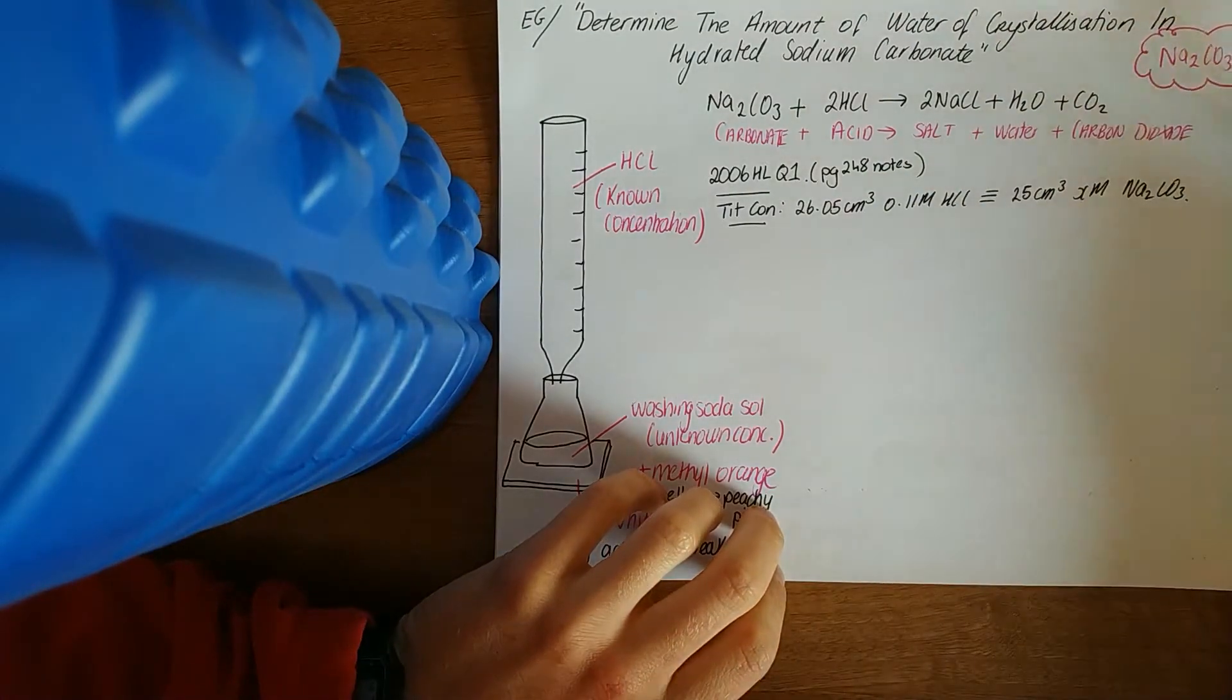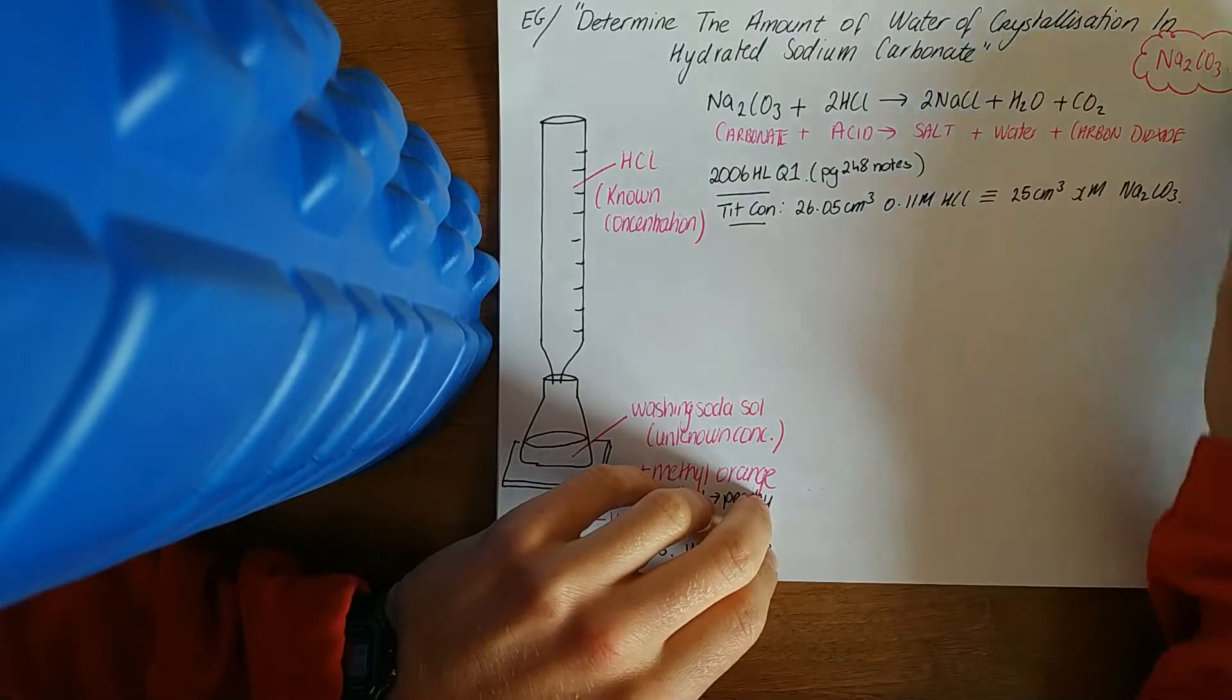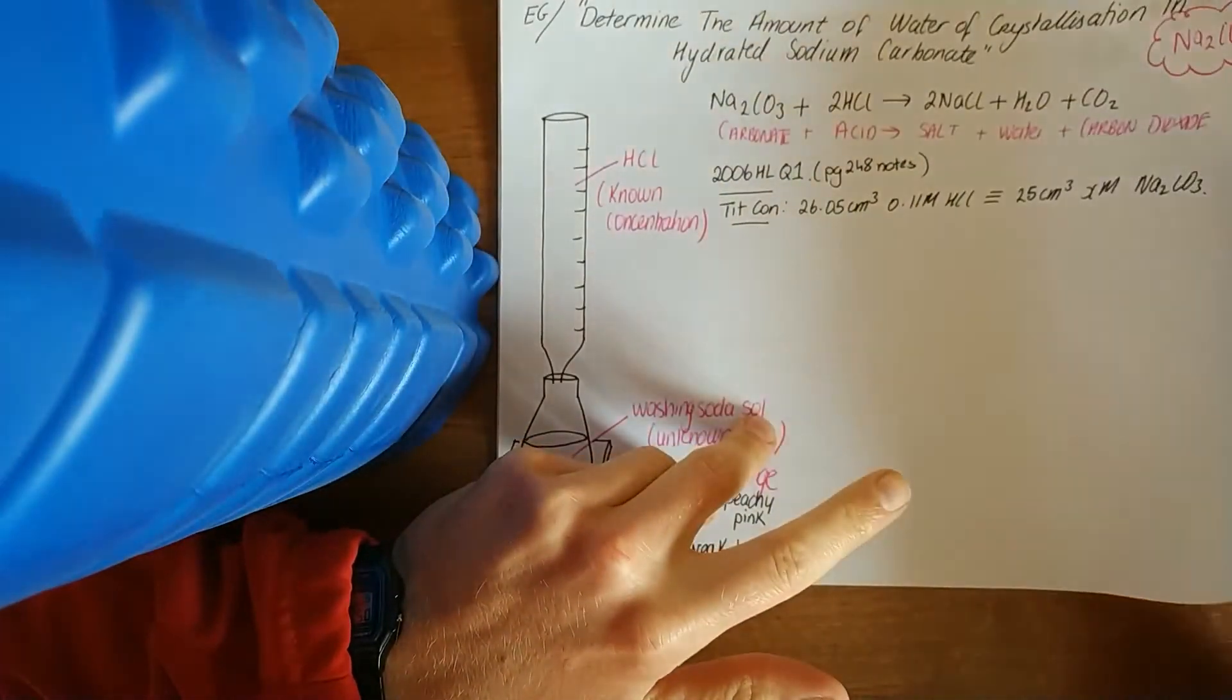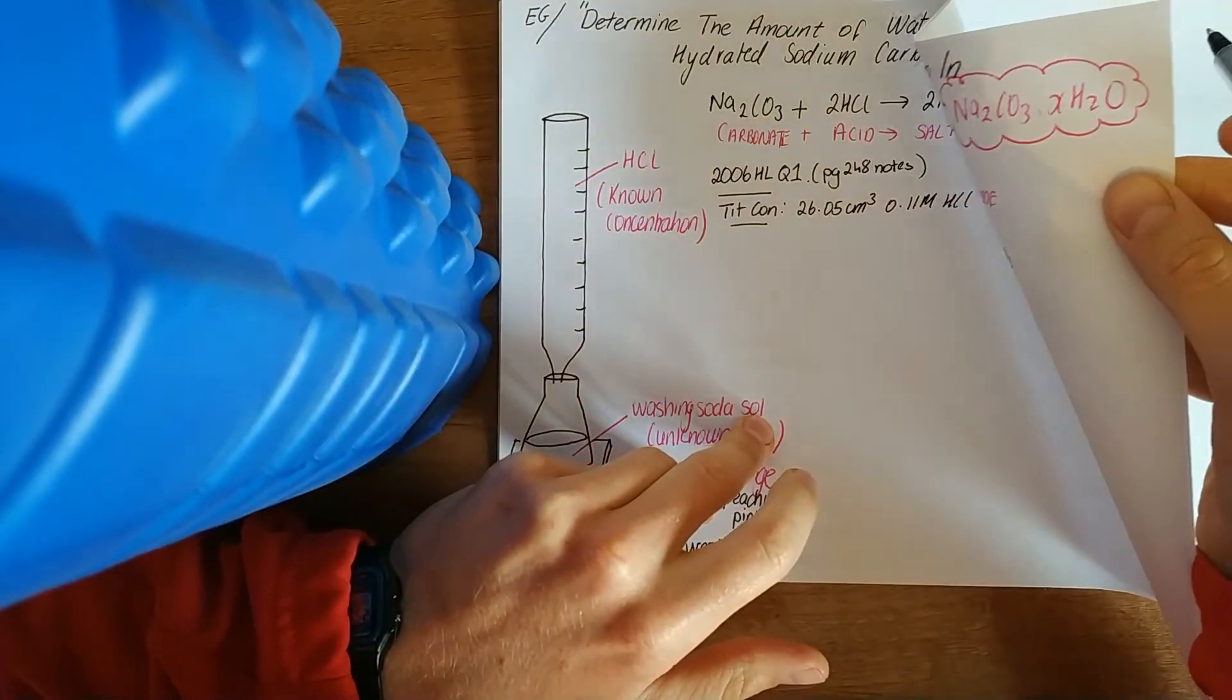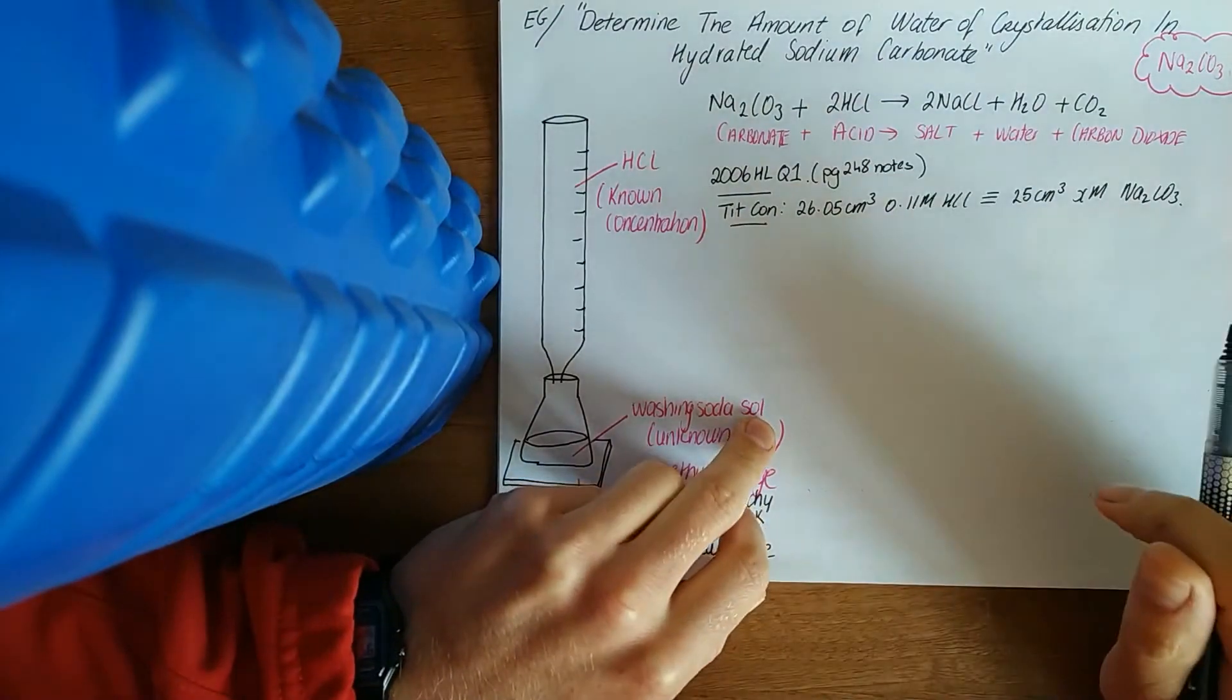Hydrated sodium carbonate is just Na2CO3 with so many waters attached. What we're going to do in this experiment is work out that value of X, how many water molecules are attached to that sodium carbonate.